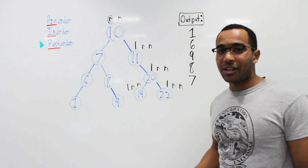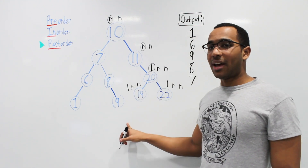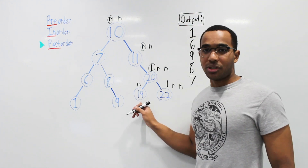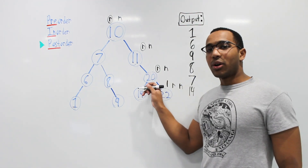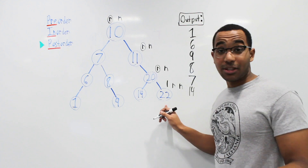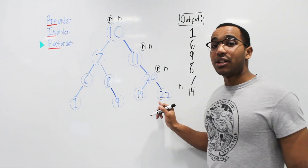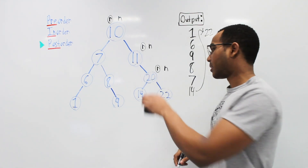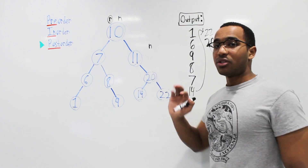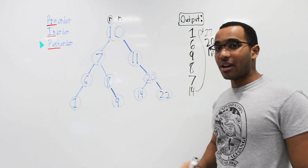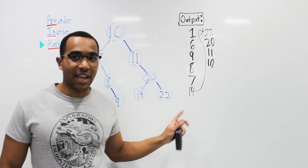We come to 11. 11 goes left — nothing, goes right to 20. 20 goes left to 14: go left — nothing, go right — nothing, print 14. Return to 20. 20 goes right to 22: go left — nothing, go right — nothing, print 22. Return to 20. 20 prints itself, returns to 11. 11 prints itself, returns to 10. 10 prints itself — and we've completed our post-order traversal.